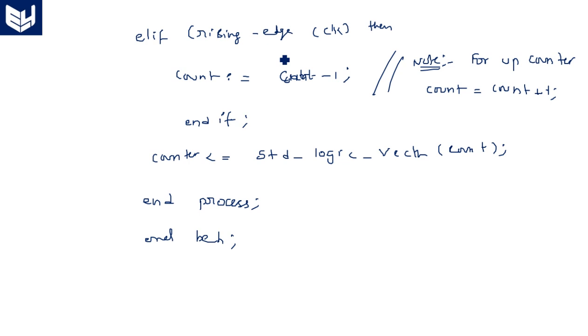Whereas in the forward direction, for up counter, we have count is equal to count plus 1. That plus indicates it is an up counter and minus indicates it is a down counter.